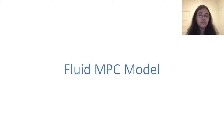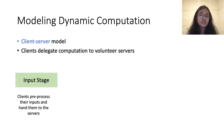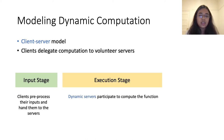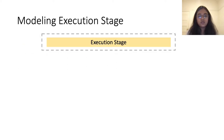I will now talk about the Fluid MPC model in more detail. We model computation in this setting in the well-studied client-server model, where clients can delegate computational tasks to a set of volunteer servers. This computation proceeds in three main stages: the input stage, where clients share their inputs with the servers; the execution stage, where a set of dynamic servers perform the main computation; and the output stage, where the servers share the output with the clients, who can then reconstruct and learn the output. Since we assume that the clients are static, dynamism only shows up in the execution stage.